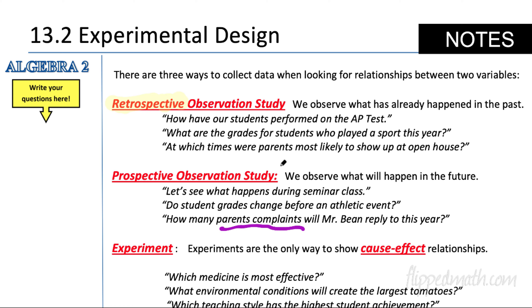Observational studies are kind of nice because they're easy to do — you can just pull the data and correlate it. But you have to be careful because there's a huge difference between observational studies and the next type, which is an experiment. Let me show you why.